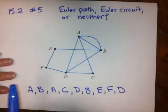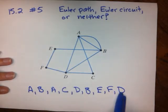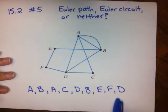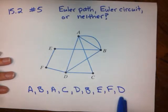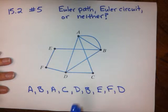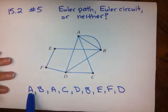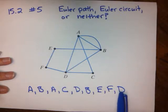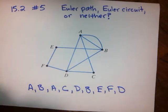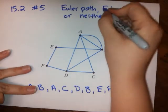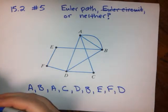Just like in number 1, we know right off the bat from looking at this that it cannot be an Euler Circuit. Why? Because an Euler Circuit stops and starts on the same vertex. So if it started on A, it needs to end on A, but in this case it ends on D. So we know right off the bat that this cannot be an Euler Circuit.